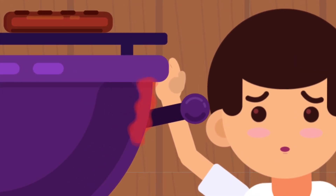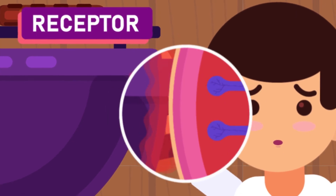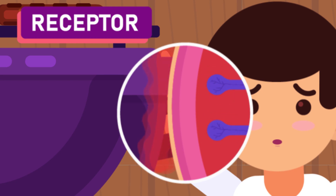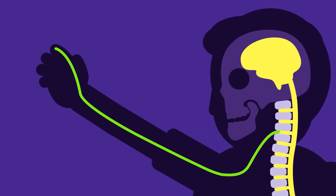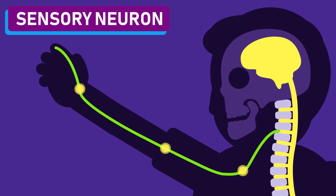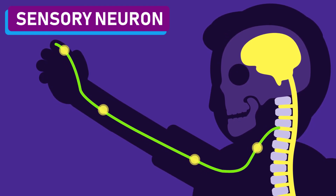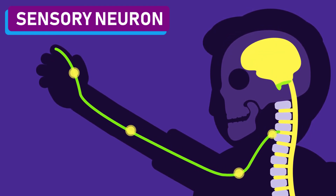There are five major components that make up the reflex arc. 1. Receptor — a receptor is a cell or organ that can detect an external stimulus. In this case, it's the skin. 2. Sensory Neuron — it carries the stimulus in the form of an impulse towards the spinal cord. It may also involve the brain.